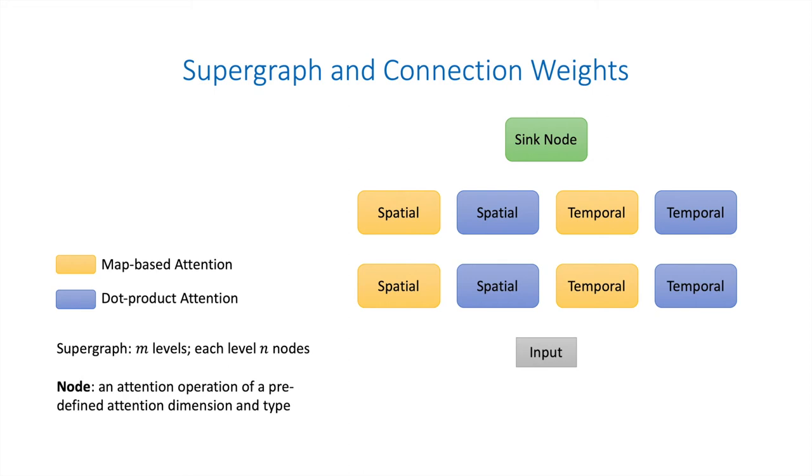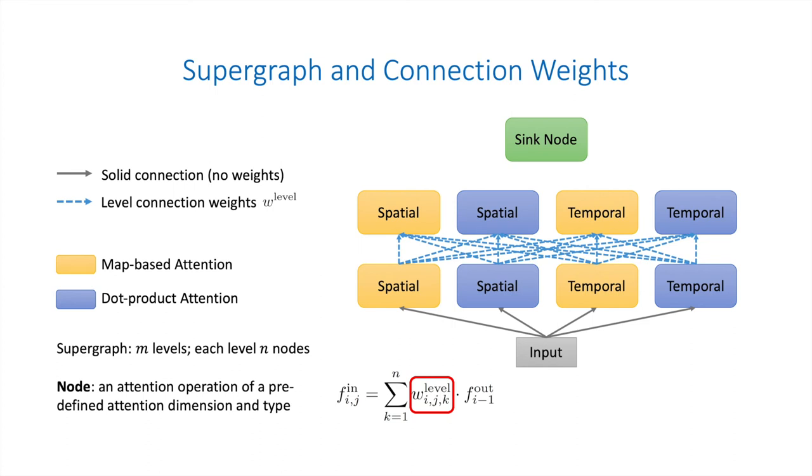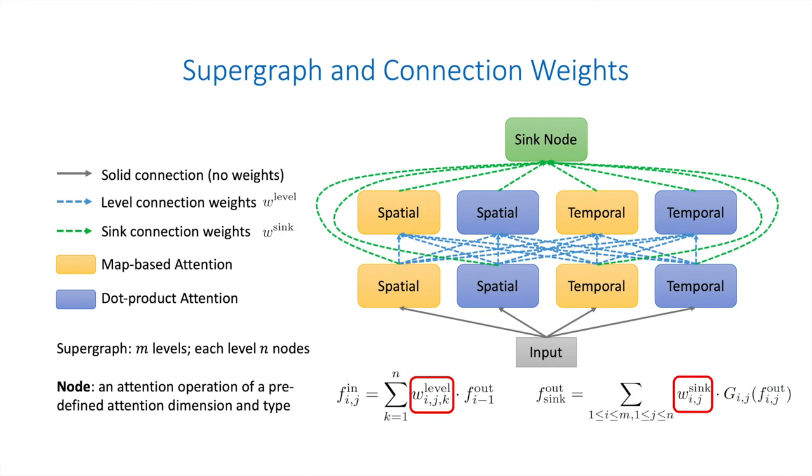The supergraph has several levels and each level has multiple nodes. Each node is an operation of a predefined attention dimension and type. The input feature map is passed to all the nodes at the first level. Starting from the second level, each node receives the outputs of all the nodes at its previous level. We learn level connection weights to indicate the importance of connections between levels. The supergraph also has a sink node receiving the output of all the nodes and we learn sink connection weights to indicate the importance of each node.